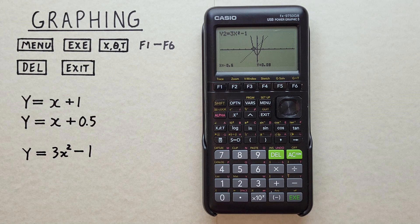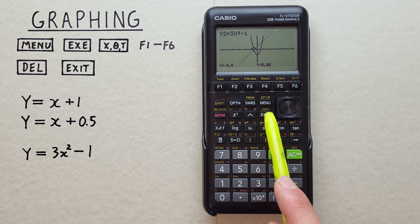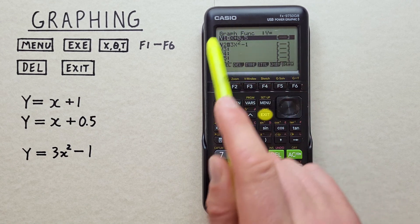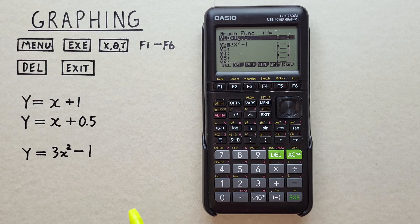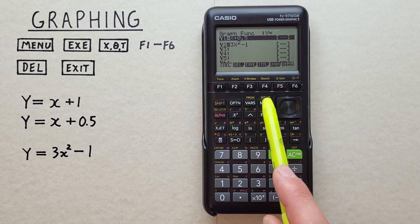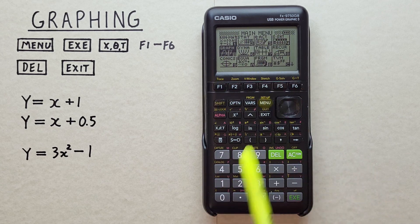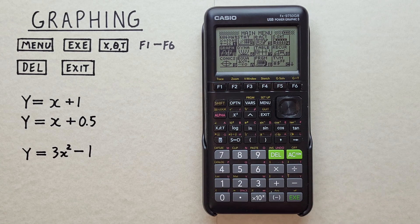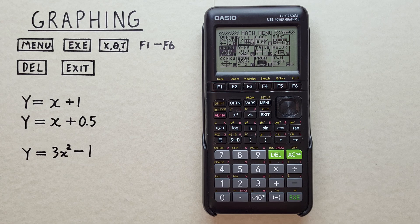Once we're done with this, we can just hit the EXIT key to go back to our graphing function menu. And when we're done with all of this, we can just hit the MENU key to go back to our main menu. There we go. That covers a bit of the basic graphing on this calculator, but we'll go more in depth in a future video.